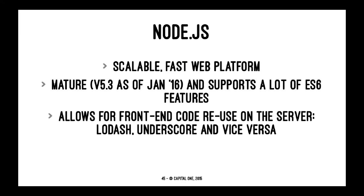So what is Node.js? Node.js is a scalable, fast web platform. It's very mature — version 5.3 as of this recording — and supports ES6 features by default with no need for extra flags. We can use libraries like Lodash, Underscore, and others like Jade on both the browser and the server. Sometimes this is called isomorphic or universal JavaScript — I call it full stack JavaScript, because on all three layers we use JavaScript: on the browser, on the server, and on the database.